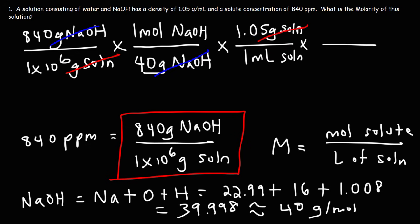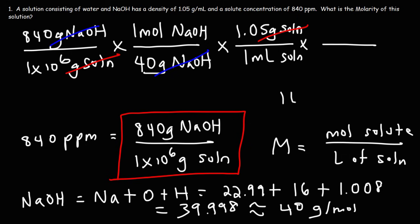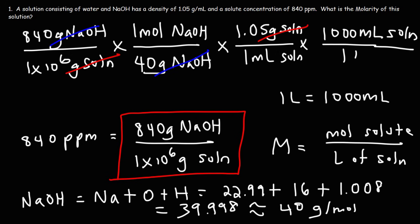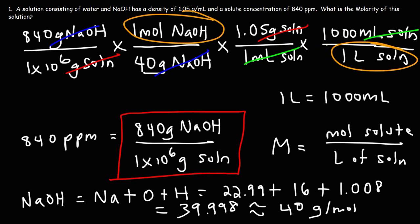Now we need to get liters of solution, so we convert from milliliters to liters. One liter is equal to 1,000 milliliters, so we put 1,000 milliliters on top and one liter of solution on the bottom, and cross out milliliters. This gives us moles of solute divided by liters of solution.